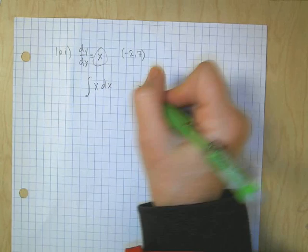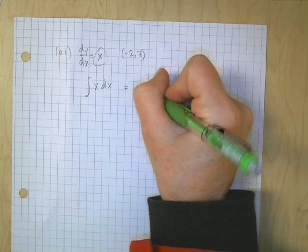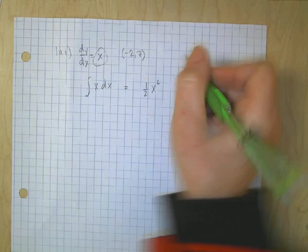So if I integrate this, I get x squared times 1 half, the reciprocal of the exponent, plus c.